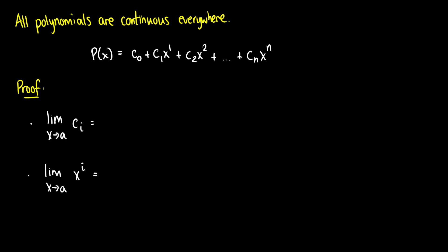There are interesting consequences of these laws. The main point is what the continuity laws tell us about other functions. Polynomials, for instance — the reason I showed you the addition and multiplication proofs is that polynomials are just combinations of constants times variables, all added together. Something like 3x² + 2x + 3 has a constant times a variable, another constant times a variable, and a constant, all added. We can think of these as three separate functions being added.